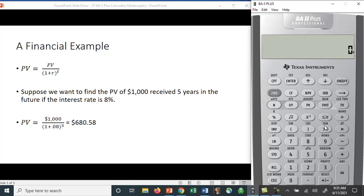Let's check using the time value of money function keys. To clear these, hit second FV. I'm going to put in 5 for N, 8 for the interest rate, 1000 for the future value, and compute the present value. Sure enough, I get the same thing: $680.58.